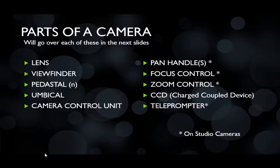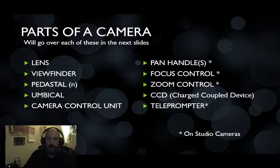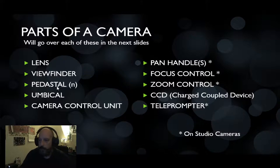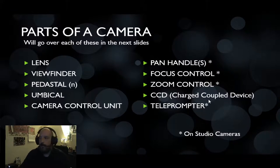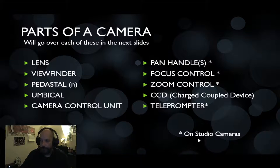When we're talking about cameras, a lot of these cameras are going to have the same things in common. They're both going to have a lens. If you consider the pedestal — which can be used as both a verb and a noun — we'll talk about the noun version first, along with the umbilical cord and the camera control unit. Behind the camera, you have pan and tilt handles so you can manually control how the camera moves, as well as focus control, zoom control, and a CCD — the charge-coupled device — which is the vision aspect of the camera, how it sees and records things. There may also be a teleprompter, which is a device used for anchor talent to read text off of.